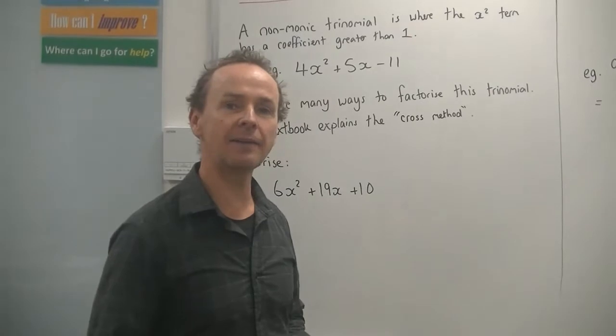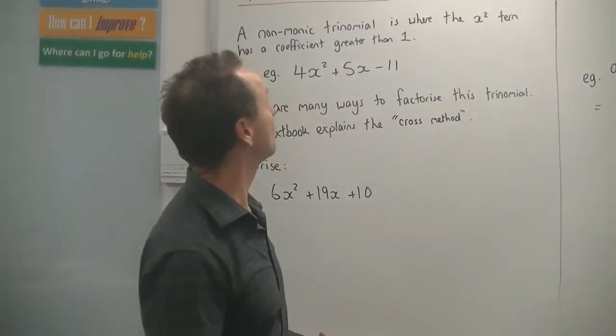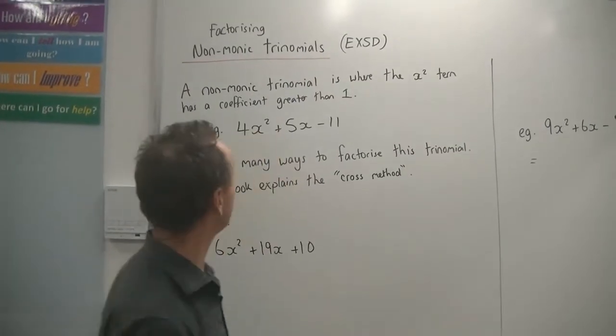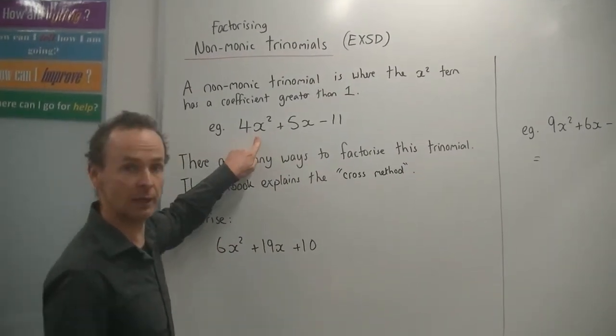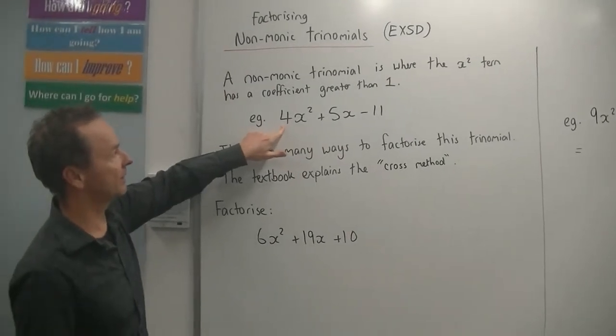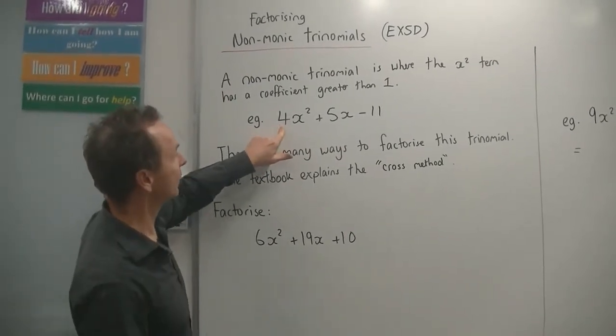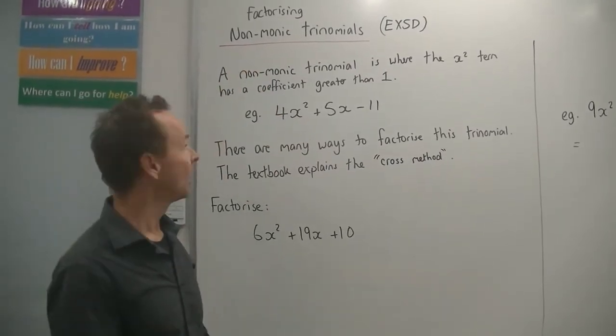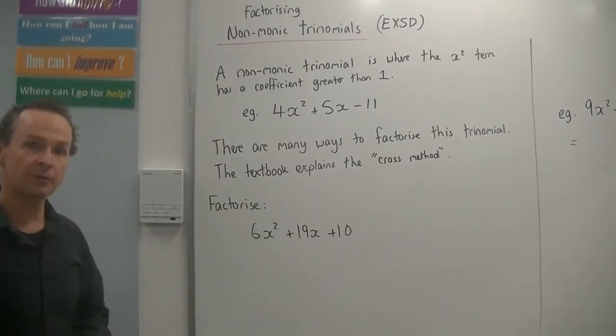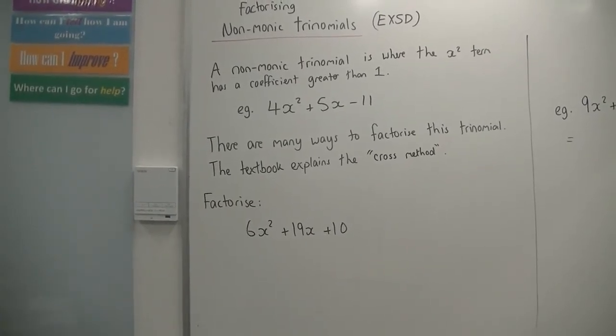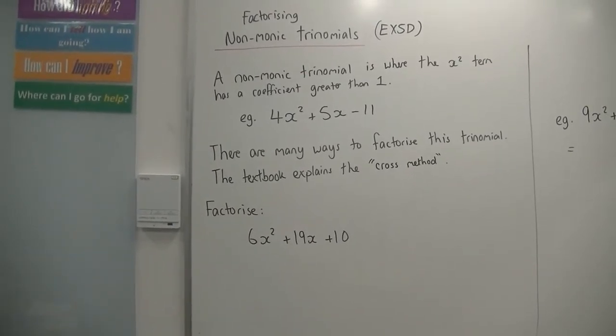Non-monic Trinomials. Hiya Tens, we are back and this time we're factorising non-monic trinomials. So you remember from last lesson, non-monic means that the coefficient of the x squared term is not 1. In this case, most of our examples are going to be greater than 1. So here it's got 4x squared, so that means it's a non-monic trinomial. I'll let you copy down those notes. Remember pause it as you go.